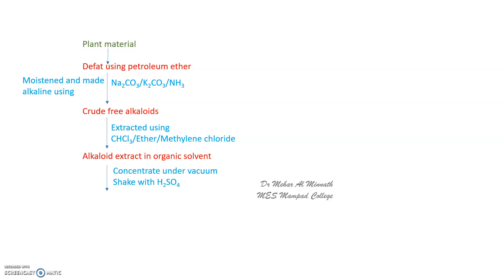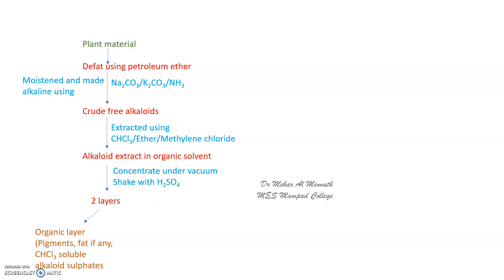The extract is concentrated under vacuum — you remove the solvent as much as possible — and then shaken with dilute sulfuric acid. Remember, you had made it alkaline earlier. You then get two layers: an aqueous layer and an organic layer. The organic layer contains pigments, residual fats, and chloroform-soluble alkaloids, while the aqueous layer contains the alkaloid salt in an acidic solution.